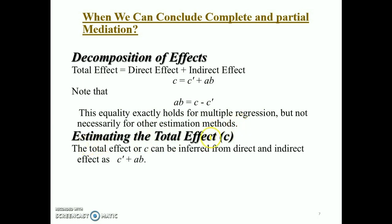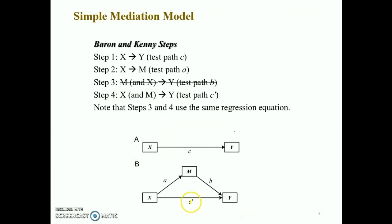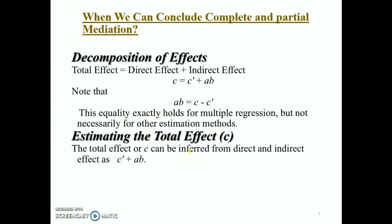Estimating the total effect: total effect equals your direct effect plus your indirect effect. In this model, C prime is referred to as the direct effect, A times B is referred to as the indirect effect, and the C coefficient refers to the total effect.